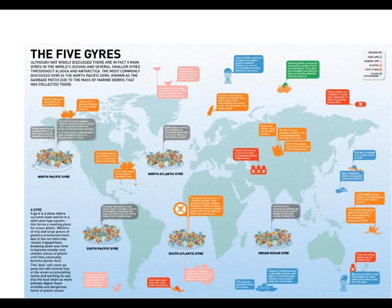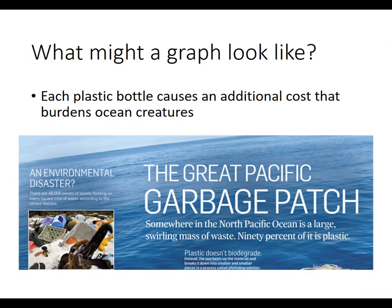This is a map showing five of these garbage patches — floating garbage dumps out in the middle of the ocean. It's such a large-scale problem. In the next video, we'll graph this problem to analyze the externality further.